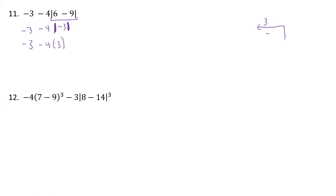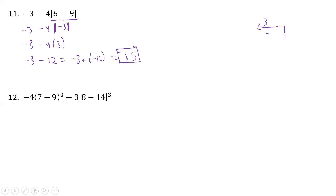Now we have a negative times a positive, so that's going to be a negative. So we'll have a negative 3 minus 4 times 3, which is 12. We can rewrite this so we have a negative 3 plus a negative 12. Same sign, so we add: 12 plus 3 is 15, same sign, negative. Our answer then is negative 15.